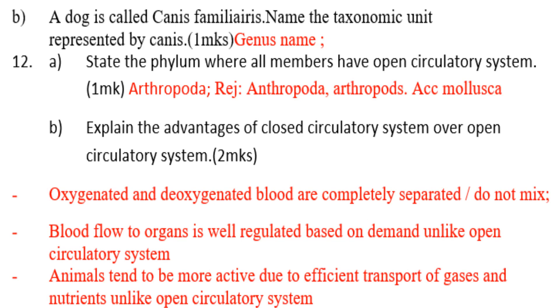Name the phylum where all members have an open circulatory system — that one is Arthropoda. Question b: explain the advantages of a closed circulatory system over an open circulatory system.